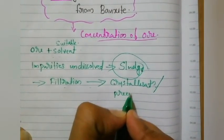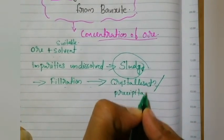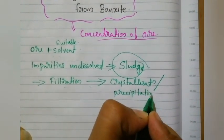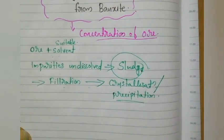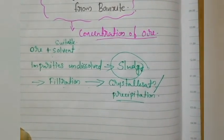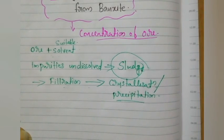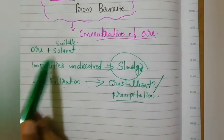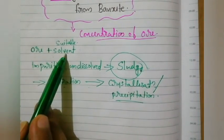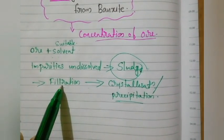By using a suitable reagent and doing filtration, we will remove solid impurities. There will be a clear filtrate, and to that filtrate we add a suitable reagent, and the ore particle can be precipitated or crystallized out. This is the general procedure for leaching.